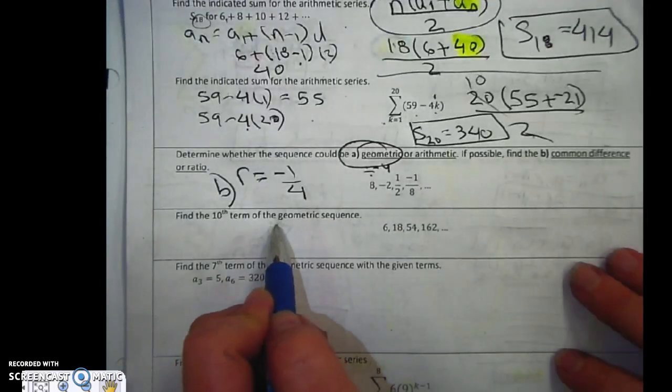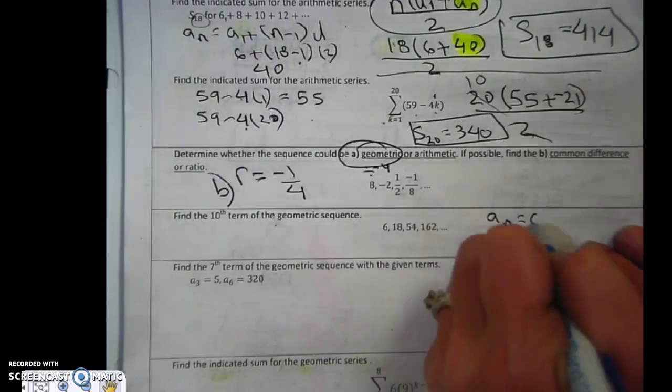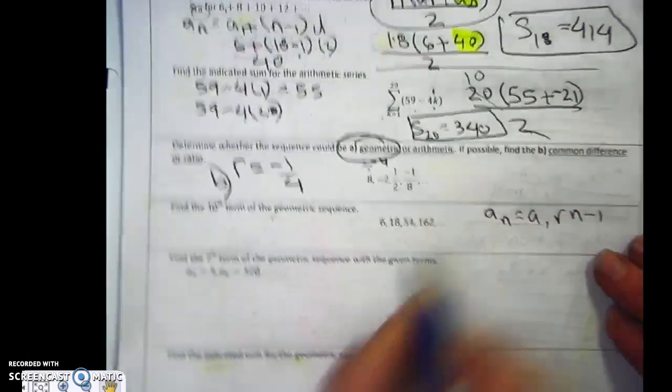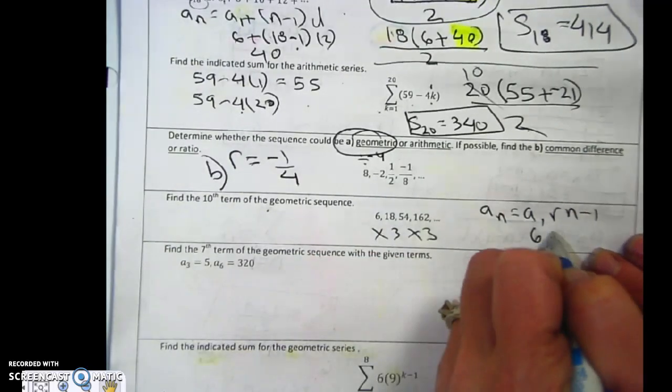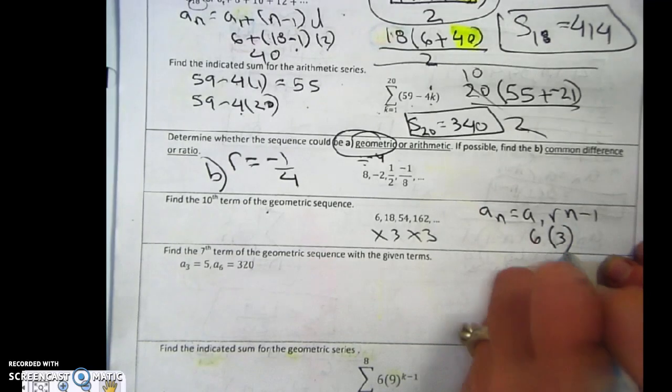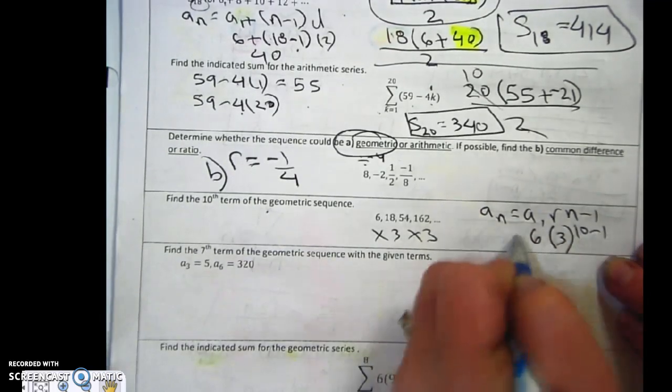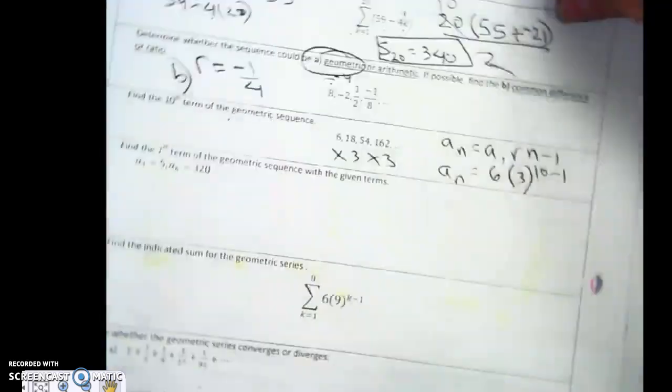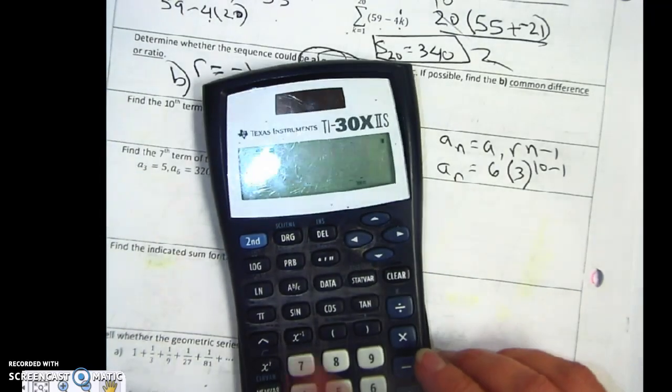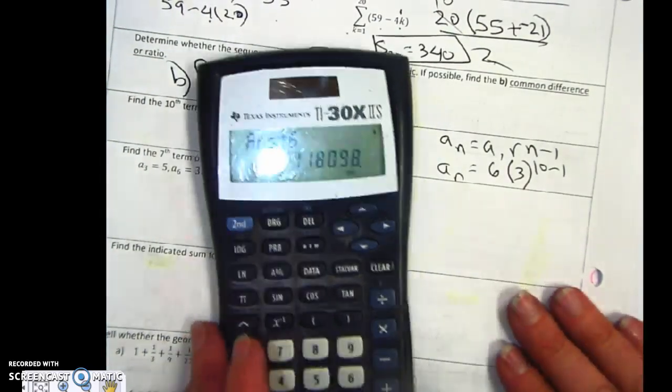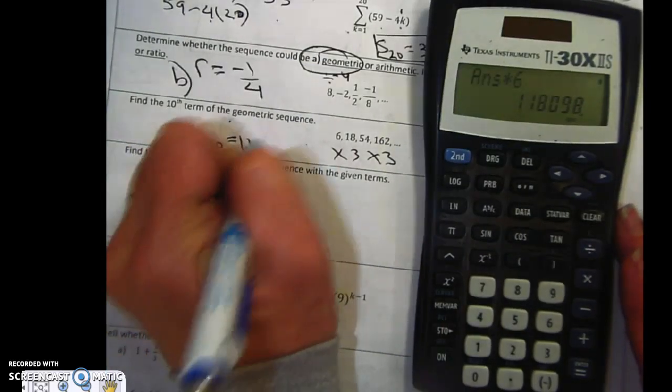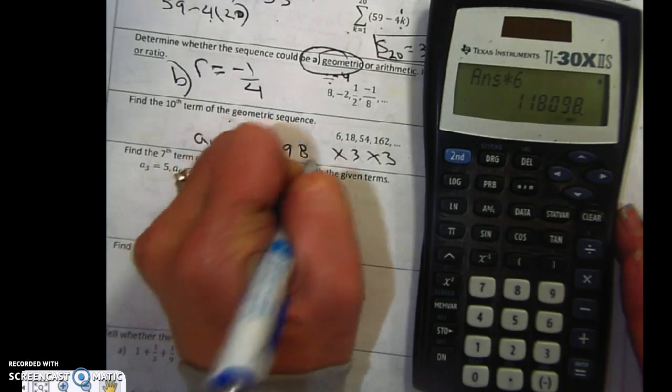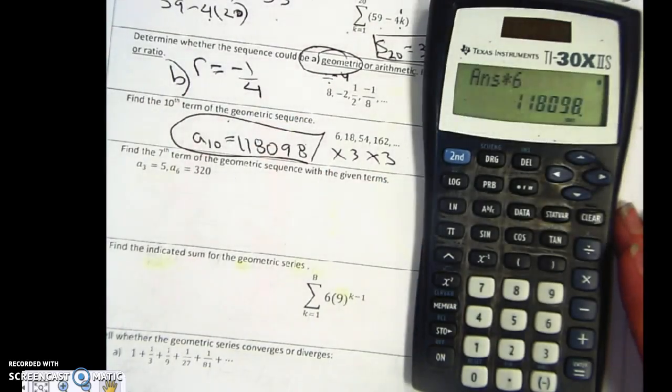Find the 10th term in the geometric sequence. a sub n equals a1 r to the n minus 1. My first term is 6. My ratio is times 3. Oh, they want the 10th term. So now I just straight plug it in. 3 to the 9th times 6. I don't always trust the calculator. So a sub 10 equals 118098.